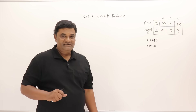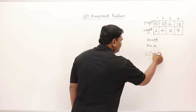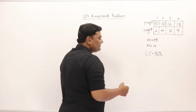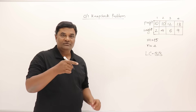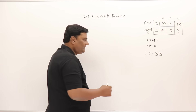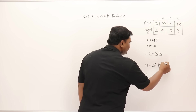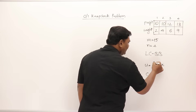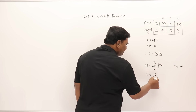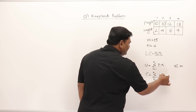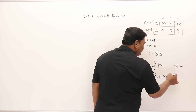We will solve this using LC branch and bound, which means we always explore the node whose cost is minimum. For each node in the state space tree, we find the upper bound and the cost. The cost is the sum of all profits including a fractional part, while the upper bound is the same sum but without fractions.